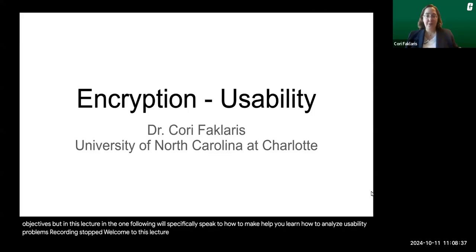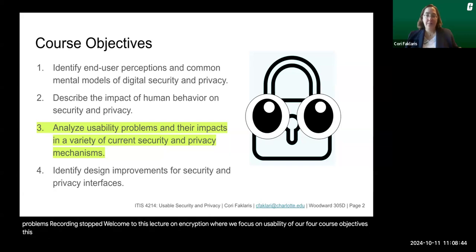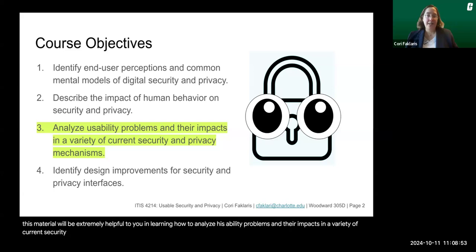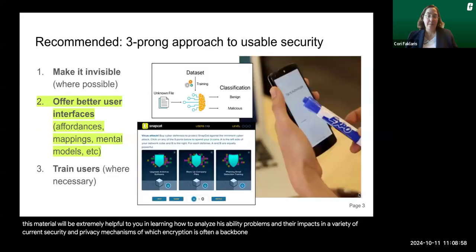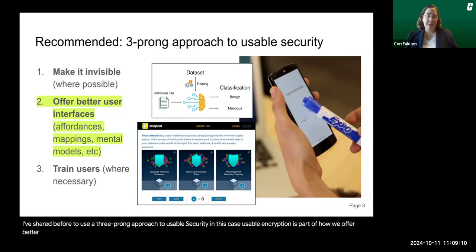Welcome to this lecture on encryption, where we focus on usability. Of our four core objectives, this material will be extremely helpful to you in learning how to analyze usability problems and their impacts in a variety of current security and privacy mechanisms, of which encryption is often a backbone. This also speaks to the recommendation to use a three-prong approach to usable security. Usable encryption is part of how we offer better user interfaces.